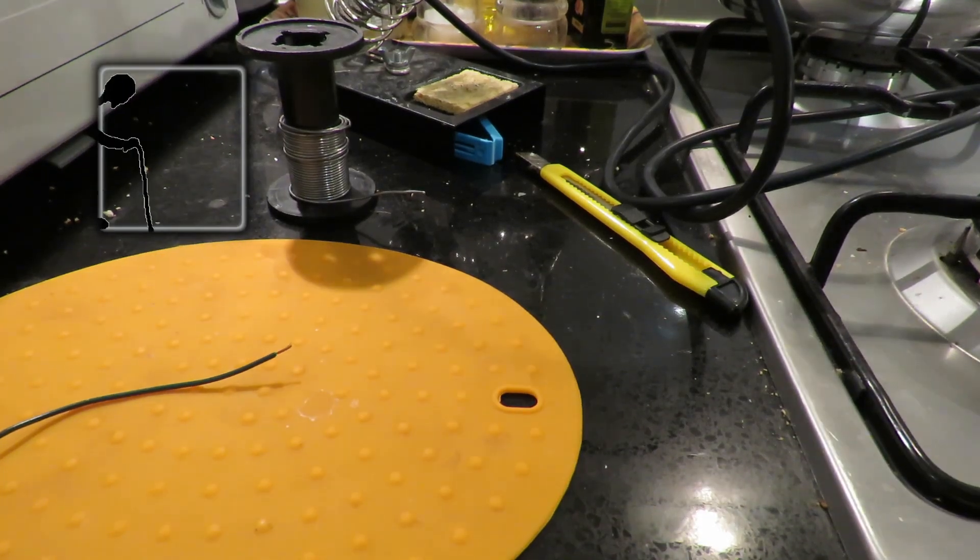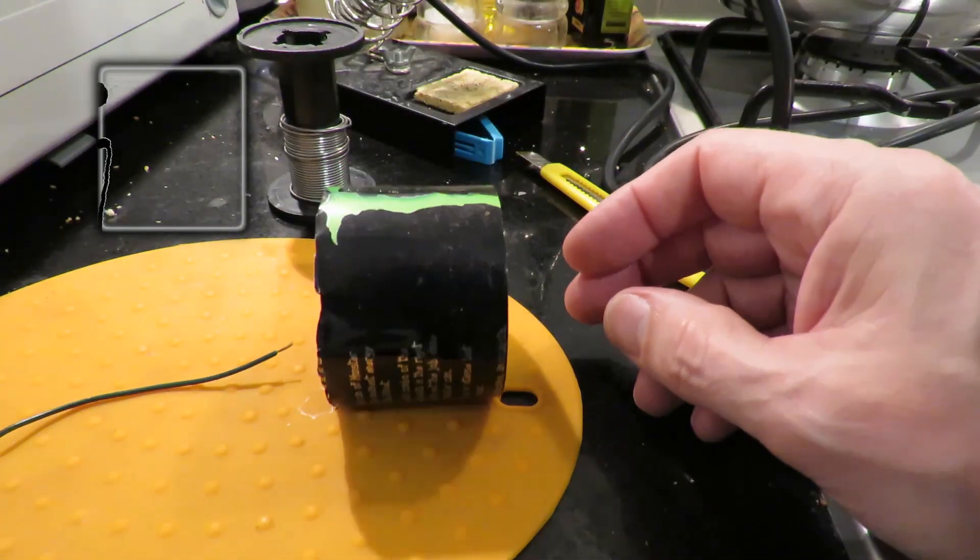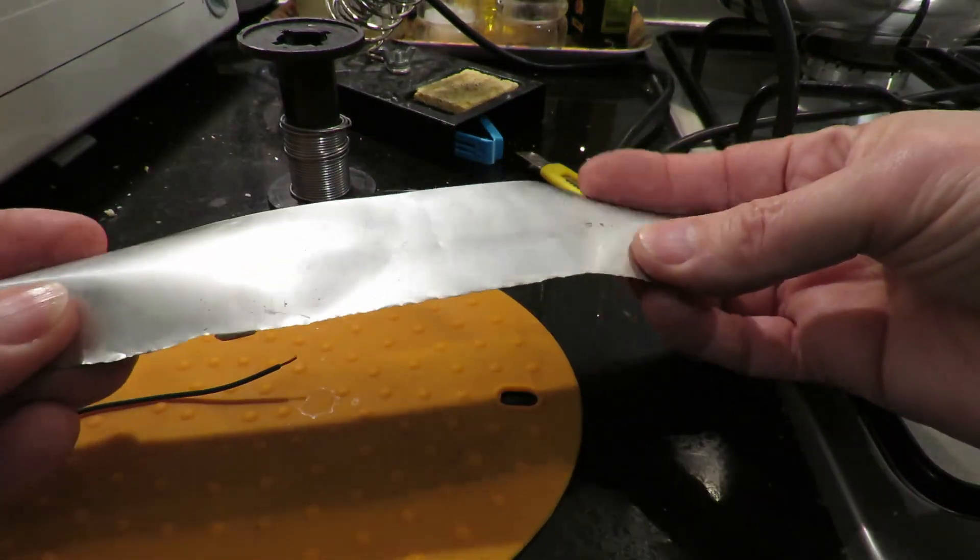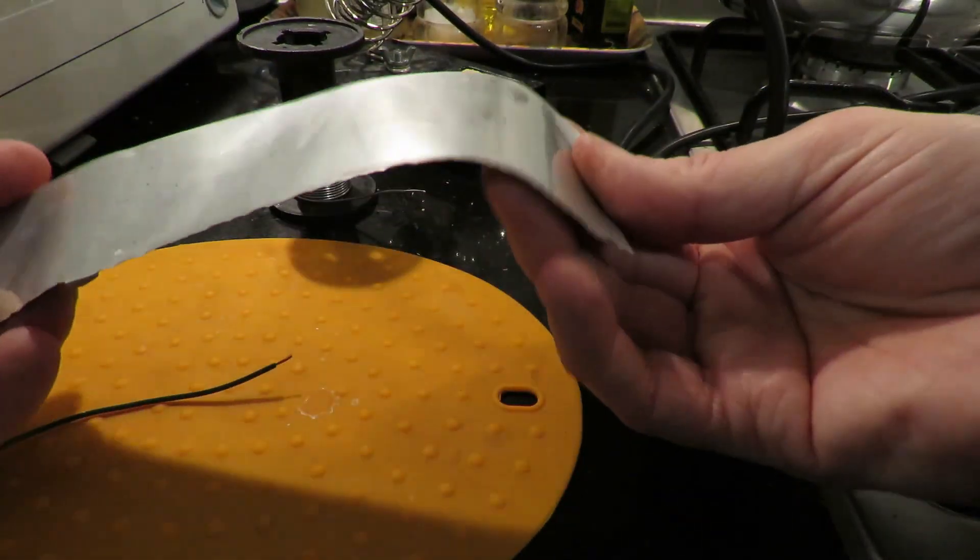So the next question is, can we solder onto some aluminum that I'm not going to be quite so scared about? Like the LiPo battery was just worrying me.